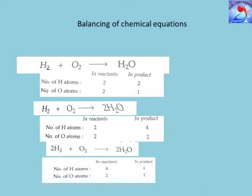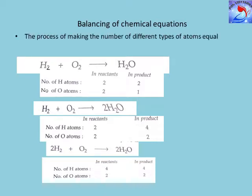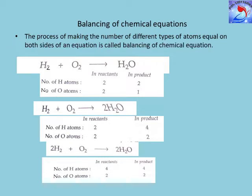Now we will balance an unbalanced chemical equation. The process of making the number of different types of atoms equal on both sides of an equation is called balancing of chemical equation. Simple equations are balanced by the hit-and-trial method. We take the example: hydrogen burns in oxygen to form water, written as H₂ + O₂ → H₂O.